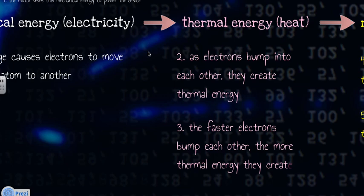So if you start with the voltage source, the electrons are moving. They're moving quickly, which builds up heat. The faster they move, the more thermal energy they're making.